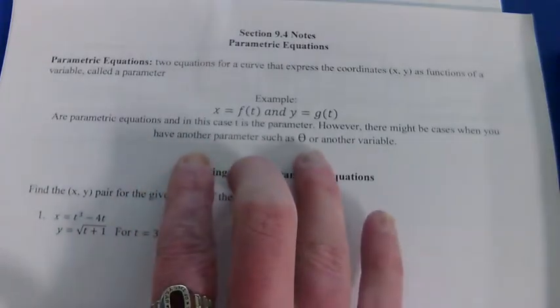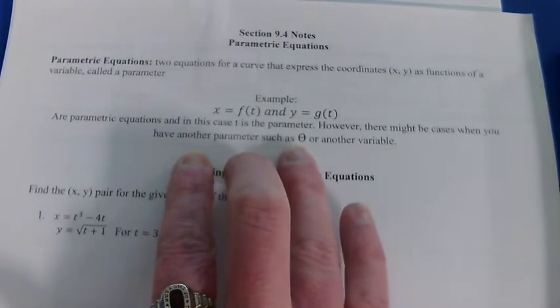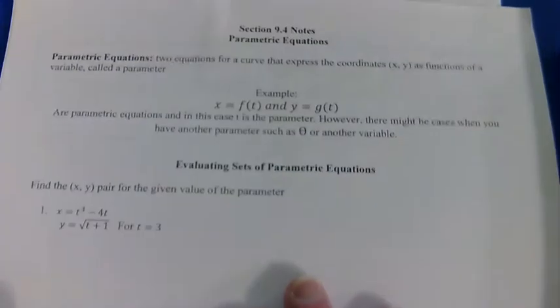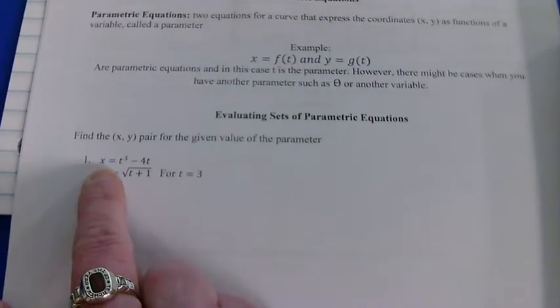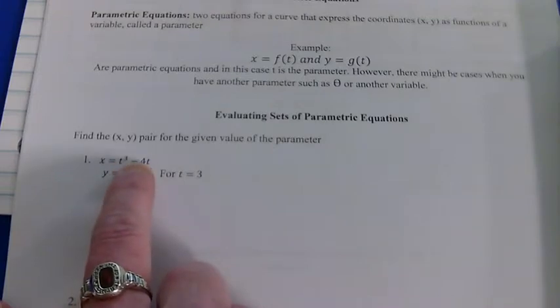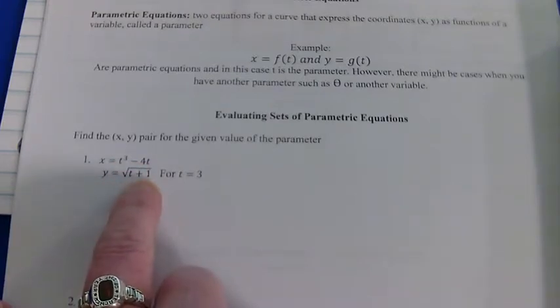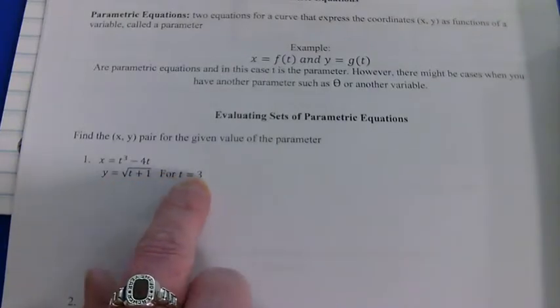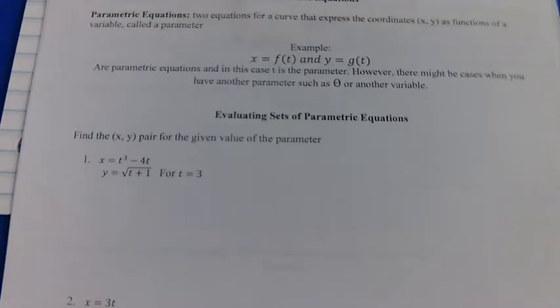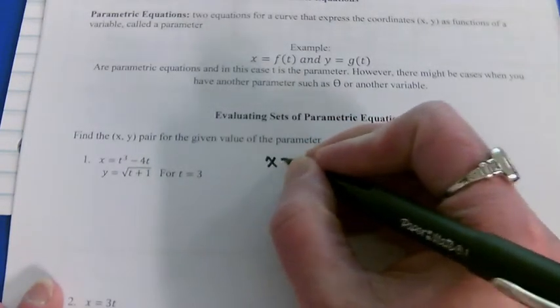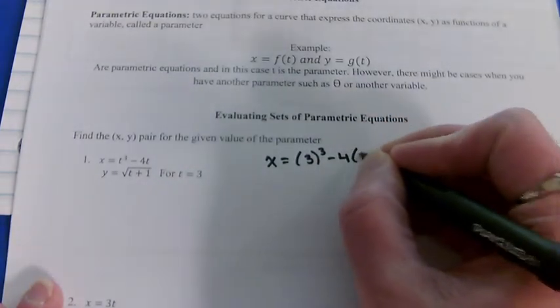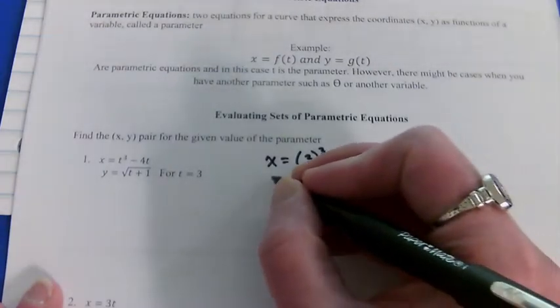Now sometimes it might be that our parameter is an angle, so we'll get to that as well. So we have an x equation that has t's (time) and a y equation that has time. Could we find the location of this ant at time 3? Well yeah you can. All you have to do is plug in t is 3. So you would just plug in 3 for each of the t's, and you'd be able to find the exact location of that ant on the graph at any given time.